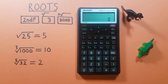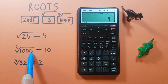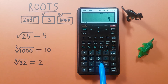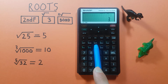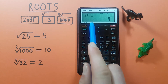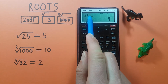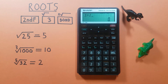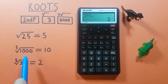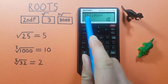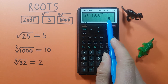How about roots that aren't square roots? To do that we start by entering the root, so if we're doing the third root of 1000, we start with the 3, and then the second function, and then the bond key. There you'll see an x root — x is the 3 in this case — and then we enter the number we're finding the root for, so in our case that's 1000, and press equals. The third root of 1000 is equal to 10.